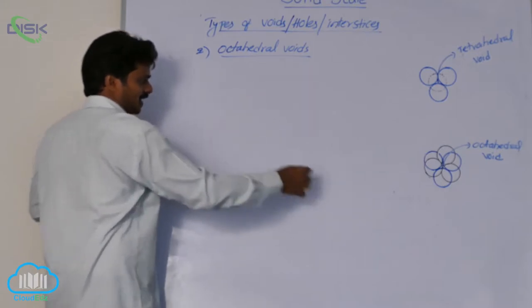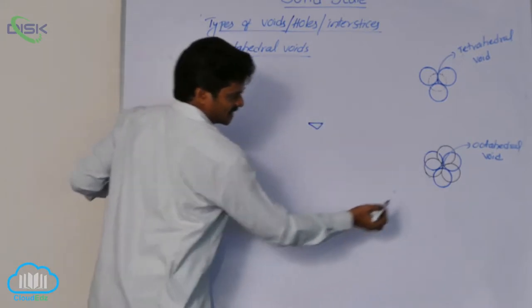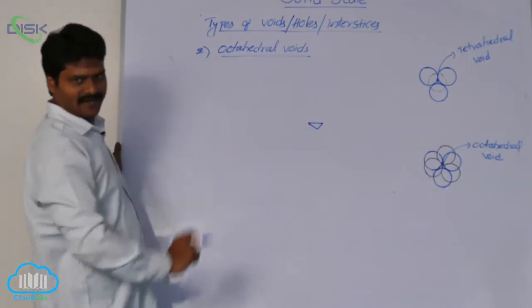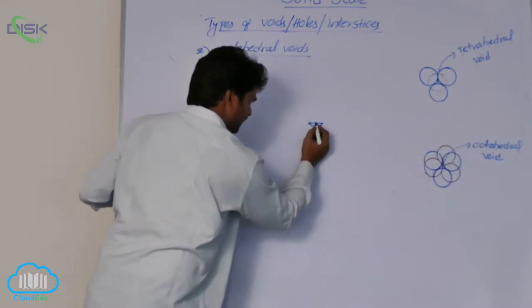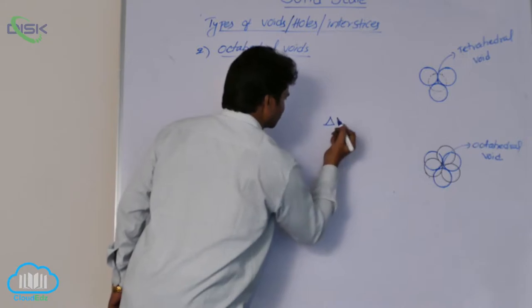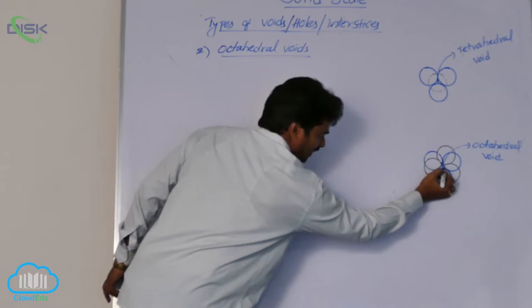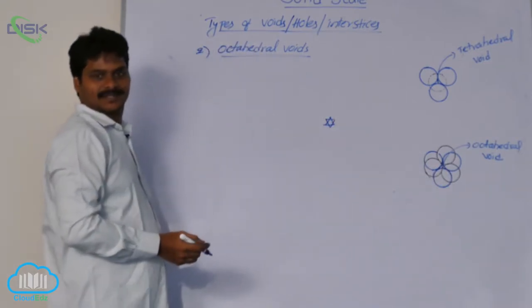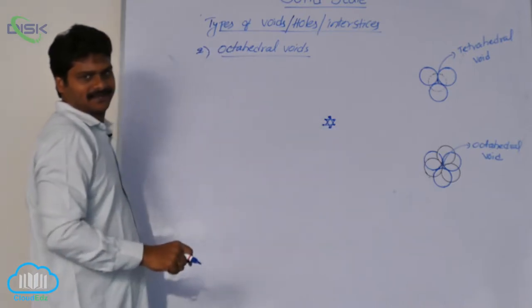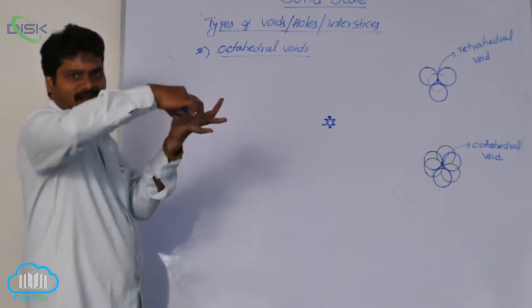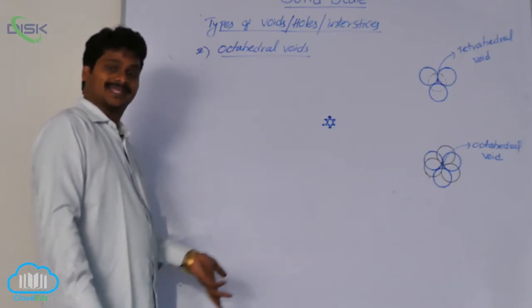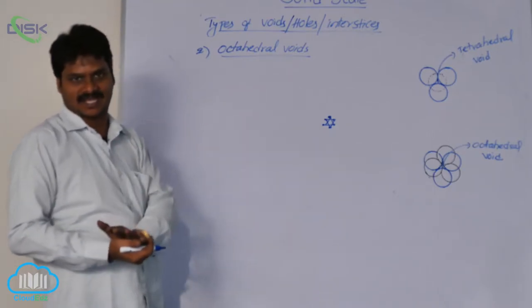When 3 spheres are in contact, there is a triangular void. When the blue colored circles are in contact, there is a blue colored triangle. Similarly, when the black colored circles are in contact, there is another triangle. The blue colored triangle has its vertex upward, while the black colored triangle has its vertex downward. These two triangular voids together form an empty space — that empty space formed by 6 spheres, 3 from one layer and 3 from the next, is called an octahedral void.